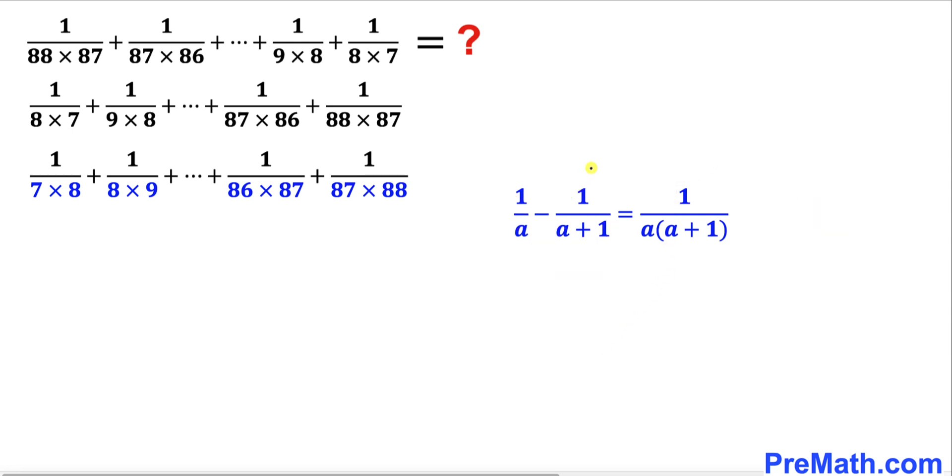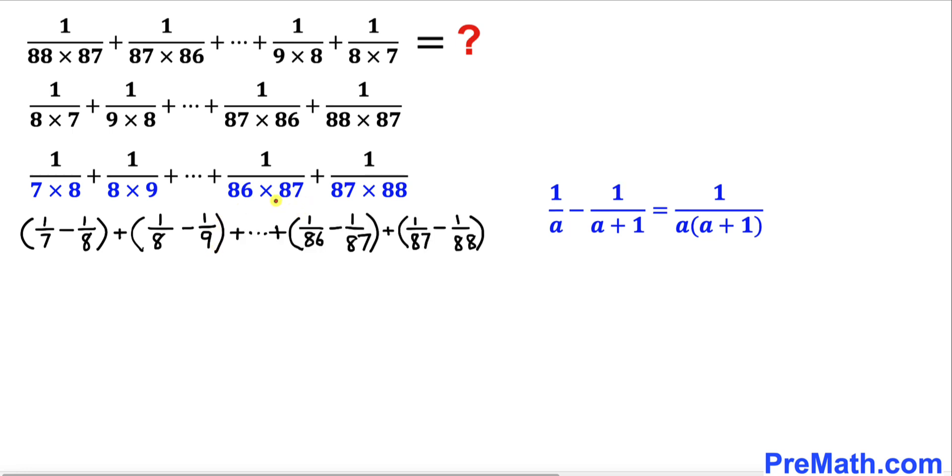If we apply this formula on the first term, it could be written as 1 divided by 7 minus 1 divided by 8. Apply the formula on the second term: that gives us 1 divided by 8 minus 1 divided by 9, and likewise.